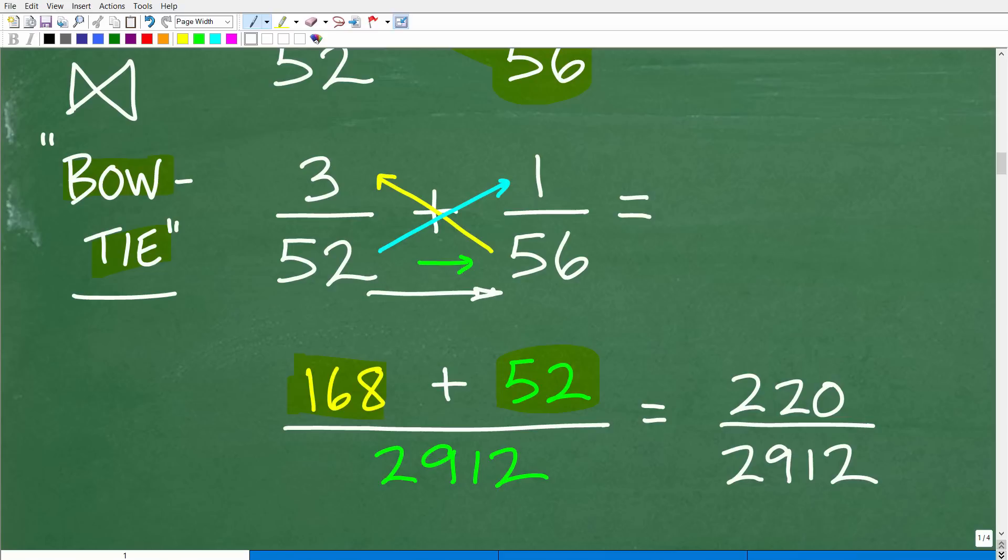Then we're going to multiply the respective denominators, 52 times 56. And this might be a little bit of work, but not nearly as much as all this prime factorization we had to do. 52 times 56, we get 2912. So I'm going to add up the numerator, 168 plus 52, these values here, and I get 220 over 2912. This is correct. Now here's the deal with the bow tie method. This answer right here, its value is the sum. We actually found the correct value to adding up these fractions.